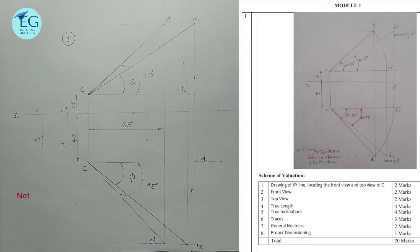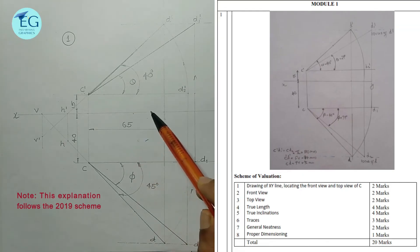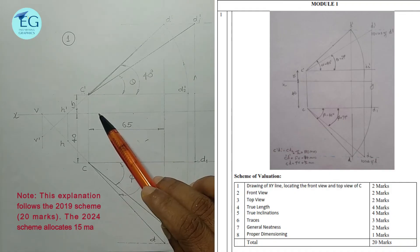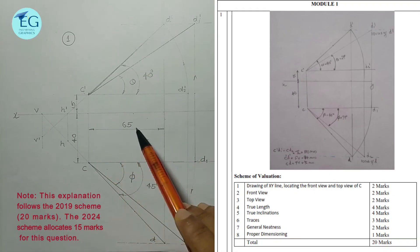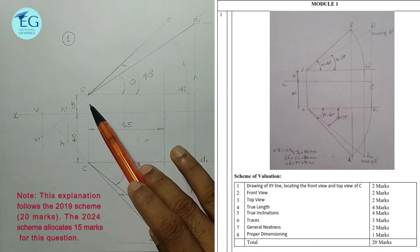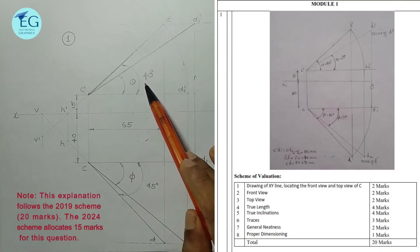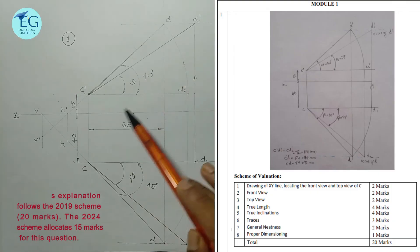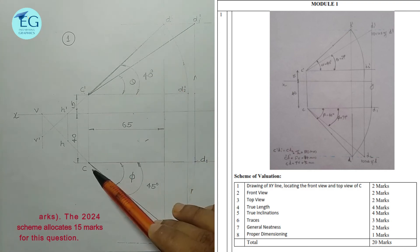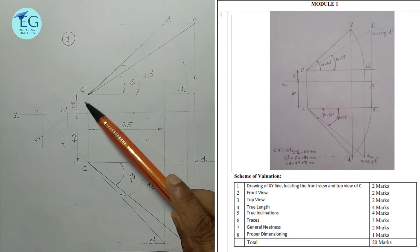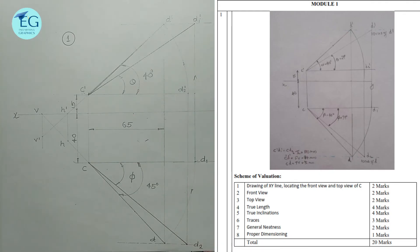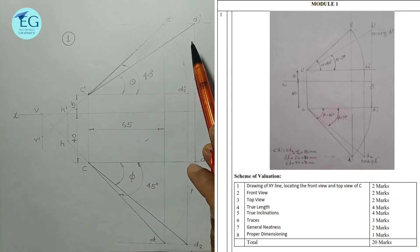The marking scheme involves: drawing the XY line and locating the front view and top view of C — that is, locating c and c dash — for two marks. Completing the front view c dash d dash at 40 degrees with horizontal distance 65 mm earns two more marks, totalling 2 plus 2 plus 2 equals 6 marks. Then rotating c dash d dash to the XY line and finding cd1 dash earns 4 marks.